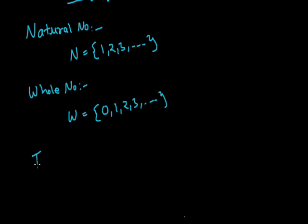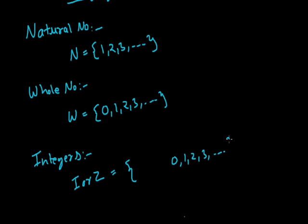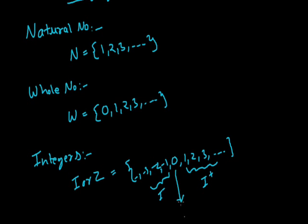And what are integers? Integers are denoted by I or Z. So integers are the whole numbers, that is 0, 1, 2, 3 and so on, and the negatives of the natural numbers, that is minus 1, minus 2, minus 3 and so on. On the right hand side of 0 they are the positive integers denoted by I plus. It should be noted that 0 has no sign — it is neither positive nor negative.